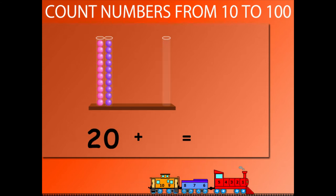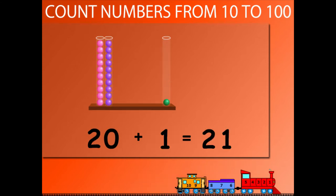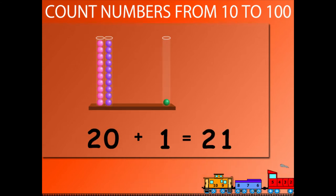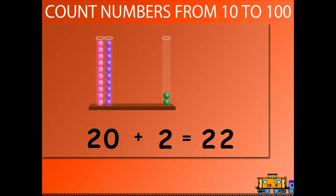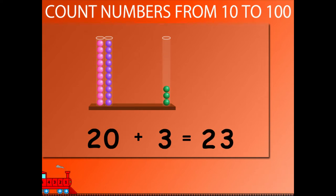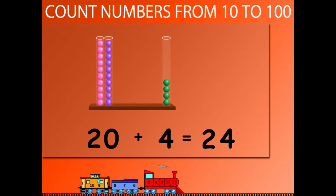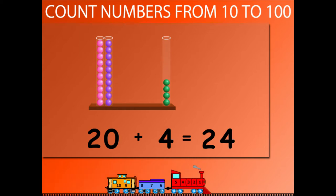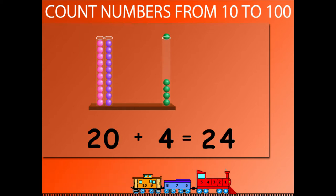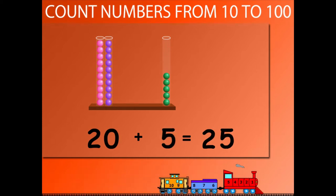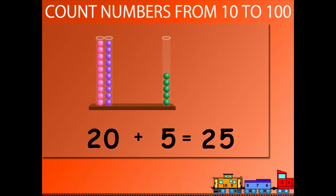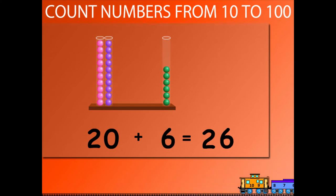20 plus 1 is equal to 21. 20 plus 2 is equal to 22. 20 plus 3 is equal to 23. 20 plus 4 is equal to 24. 20 plus 5 is equal to 25.